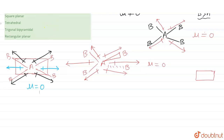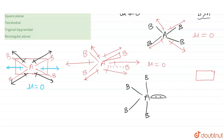Now let's talk about trigonal bipyramidal (TBP). For TBP with AB4, the shape has five positions. Three equatorial B atoms are placed, and at one position there is a lone pair. The steric number for TBP is five, meaning the number of sigma bond pairs plus lone pairs equals five. Here we have four sigma bonds and one lone pair — that's why the geometry is trigonal bipyramidal.